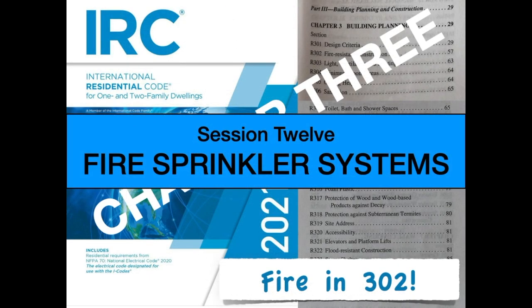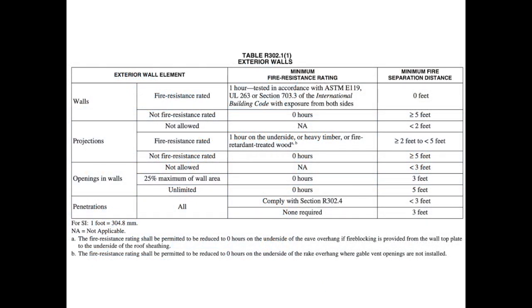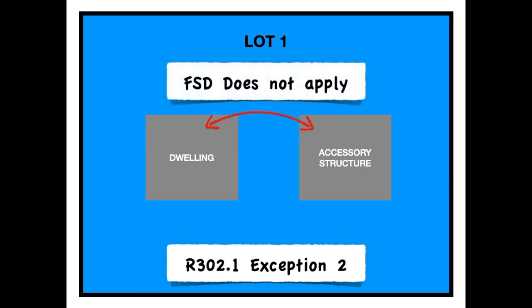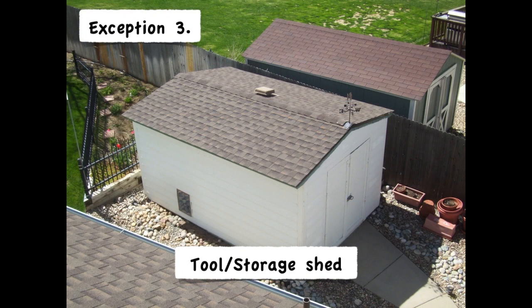I'll go over all the details of fire sprinkler system requirements found in Chapter 3 in the last session of this course. Let's start with the first element: walls. Do they have to be fire resistance rated or not? This is a good time to bring up exception 2 for fire separation distance — you do not have to protect any elements between dwellings and their accessory structures on the same lot.